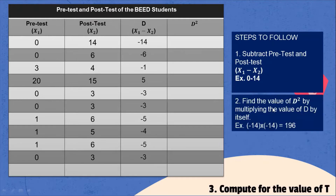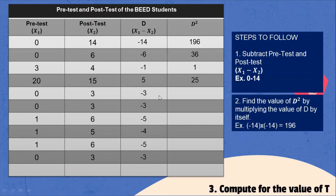Step two: find the value of d squared by multiplying the value of d by itself. The d squared values are: negative 14 × negative 14 = 196; negative 14 × negative 14 = 196; negative 6 × negative 6 = 36; negative 1 × negative 1 = 1; 5 × 5 = 25; negative 3 × negative 3 = 9; negative 3 × negative 3 = 9; negative 5 × negative 5 = 25; negative 4 × negative 4 = 16; negative 5 × negative 5 = 25; negative 3 × negative 3 = 9.